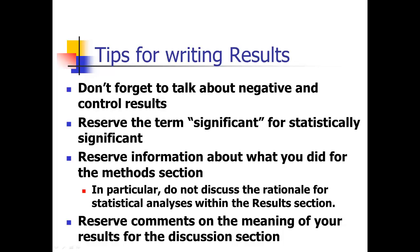Keep in mind that the term 'significant' should always be reserved for statistically significant. Also, in the results section, don't mix in methods or discussion. The results section should not contain information about what you did — only what you found. Keep what you did in the methods section. With complex statistical analyses, there's a temptation to explain the rationale for using one model versus another — that rationale belongs in the methods section, not in results.